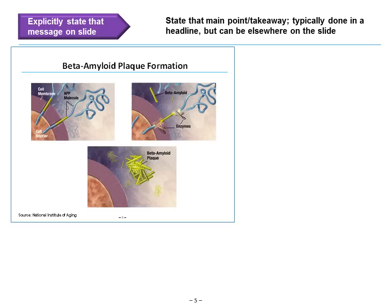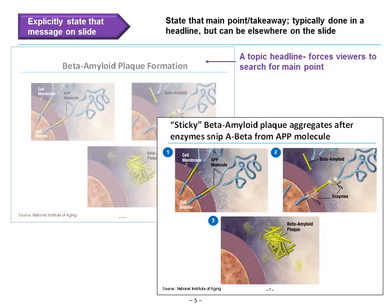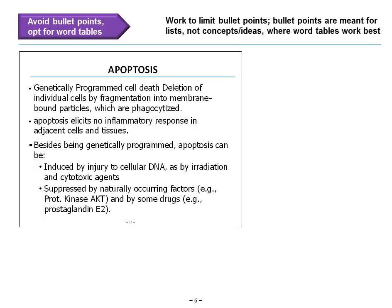When you have a main point takeaway, explicitly state that message on the slide. Take a look at this example: the headline reads 'beta amyloid plaque formation.' What are we looking at and why? This is just a topic headline — it forces viewers to search for the main point. The revision, on the other hand, gives us a message headline: 'Sticky beta amyloid plaque aggregates after enzyme snipped A-beta from APP molecule.' That message headline explicitly states what the slide is about, with no ambiguity and no guessing on the part of the reader.